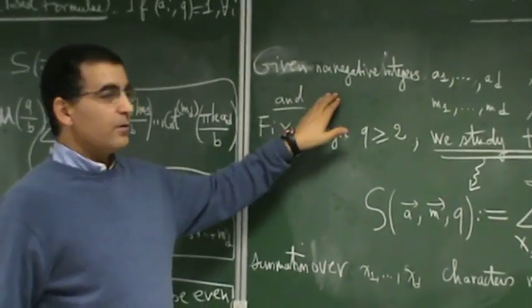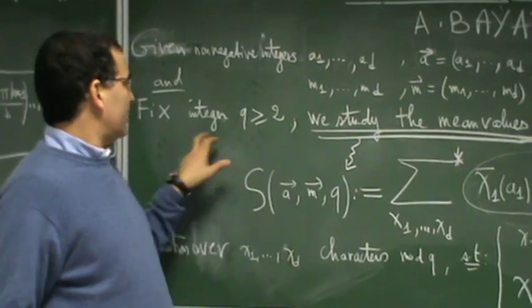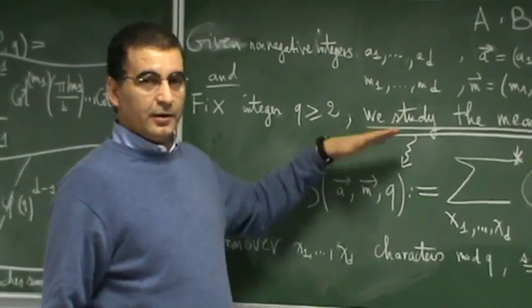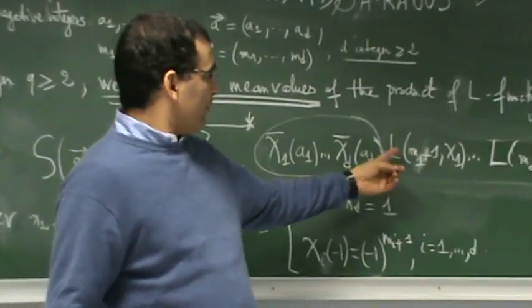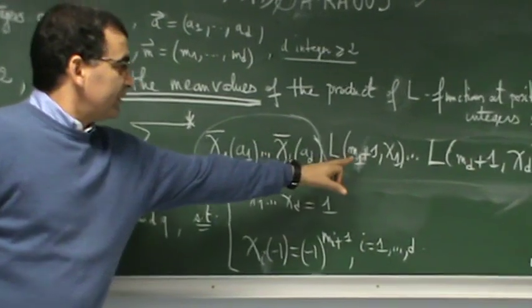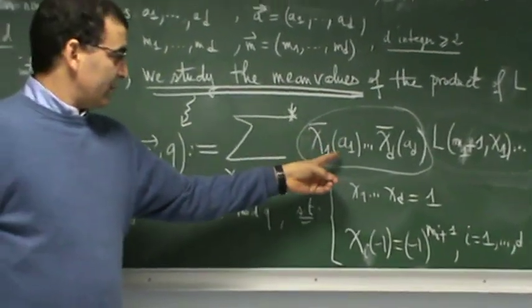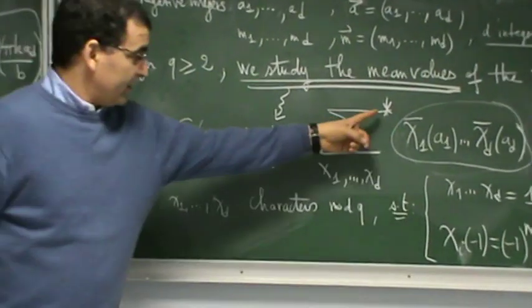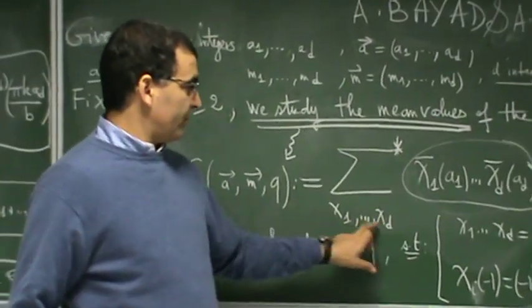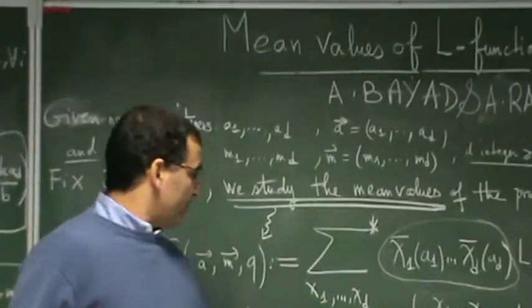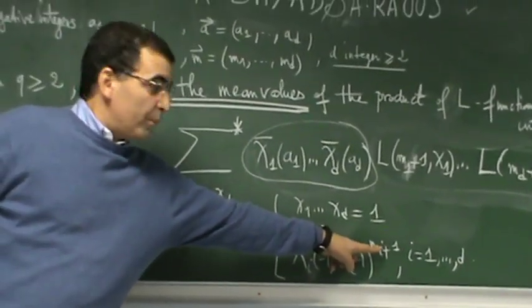we given non-negative integer E1 to ED and integer M1 to MD and we fix another integer Q greater than 2 and we want to study in this paper the mean values of the product of L-function at positive integers which is twisted by the values of Dirichlet characters here and here and the summation here is overall character modulo Q such that the product of this character is exactly 1 and the parity for each character is determined by the parity of M-E plus 1 exactly the same parity.